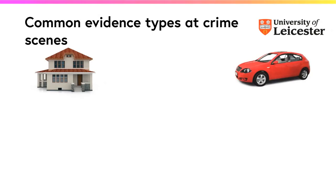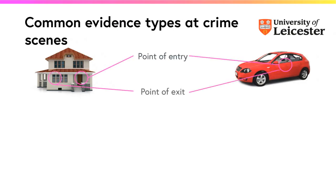On the left we've got a house that's been broken into and burgled, and on the right we've got a recovered stolen vehicle. First of all, we identify the points of entry and exit where we know for sure the offender has been. In the house, they gained entry through the front door and exited through a window. In the vehicle, they entered and exited through one of the vehicle doors.